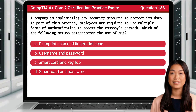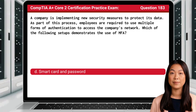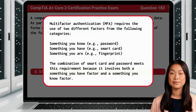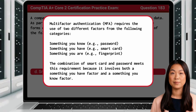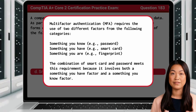The answer is D. Smart Card and Password. Multi-factor authentication, or MFA, requires the use of two different factors from the following categories: something you know, such as a password; something you have, such as a smart card; and something you are, such as a fingerprint. The combination of smart card and password meets this requirement because it involves both a something you have factor and a something you know factor.